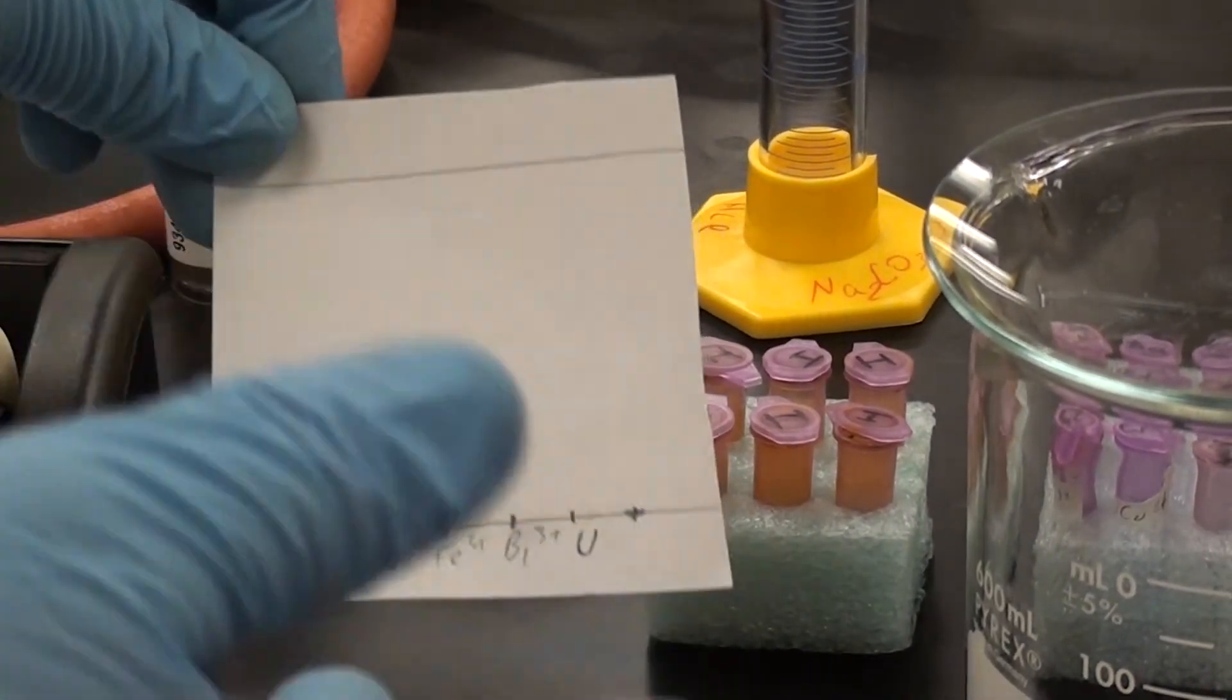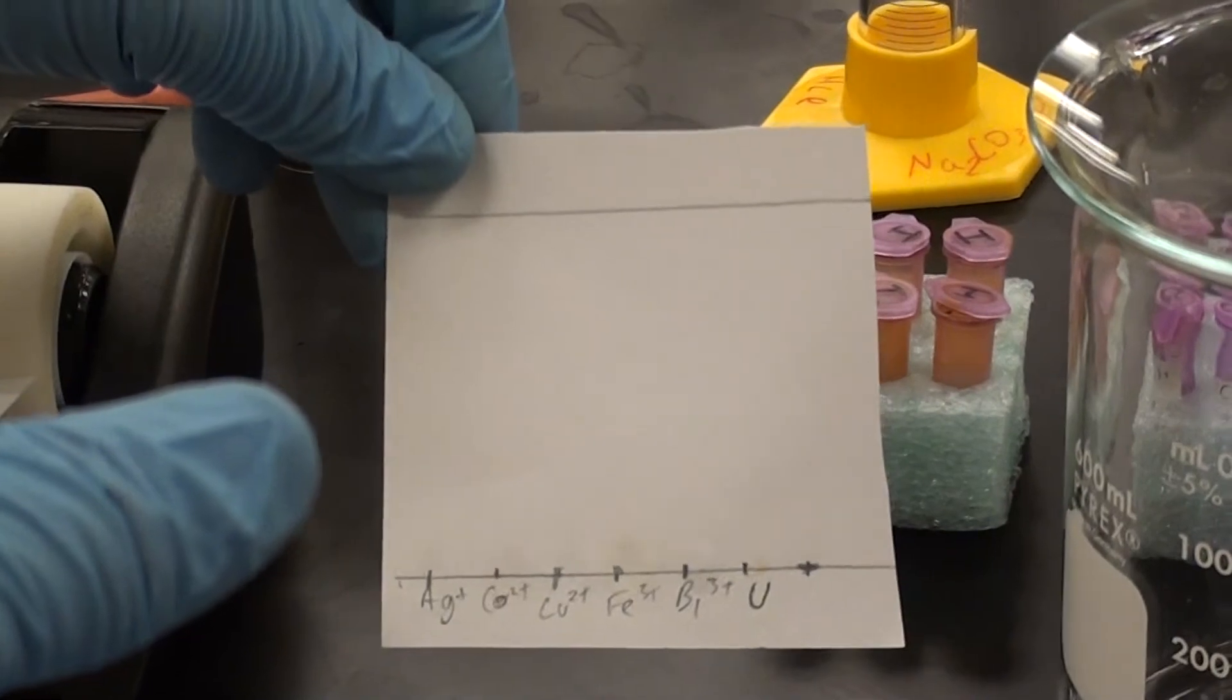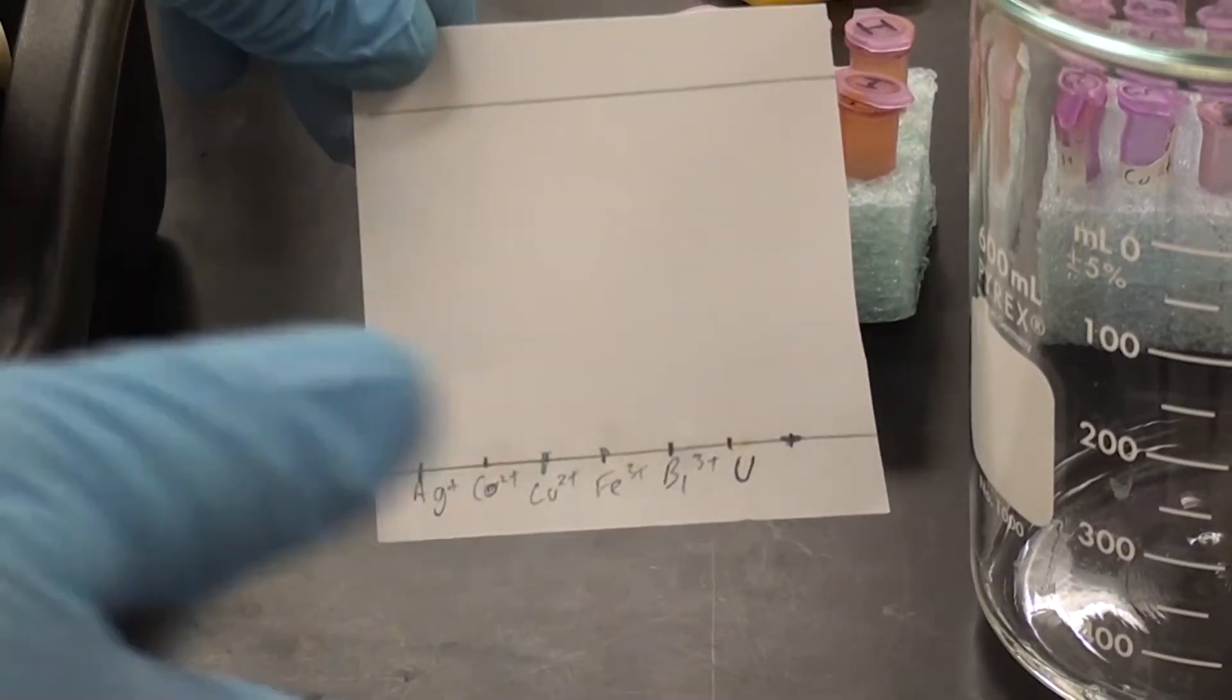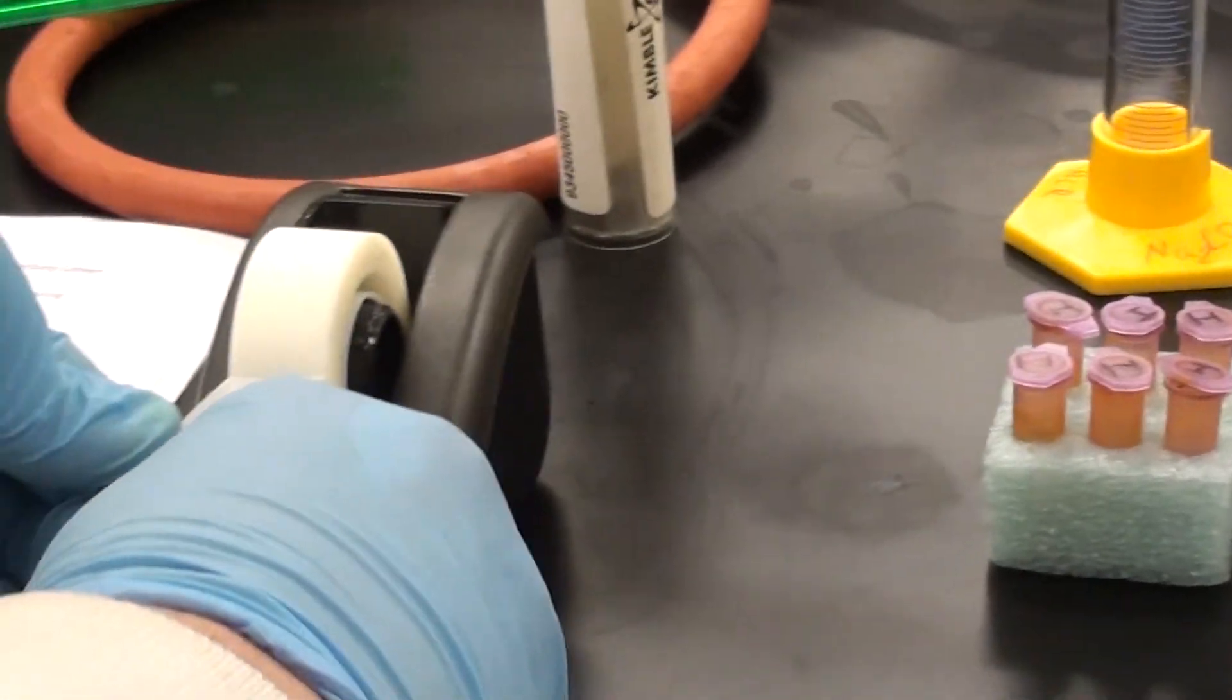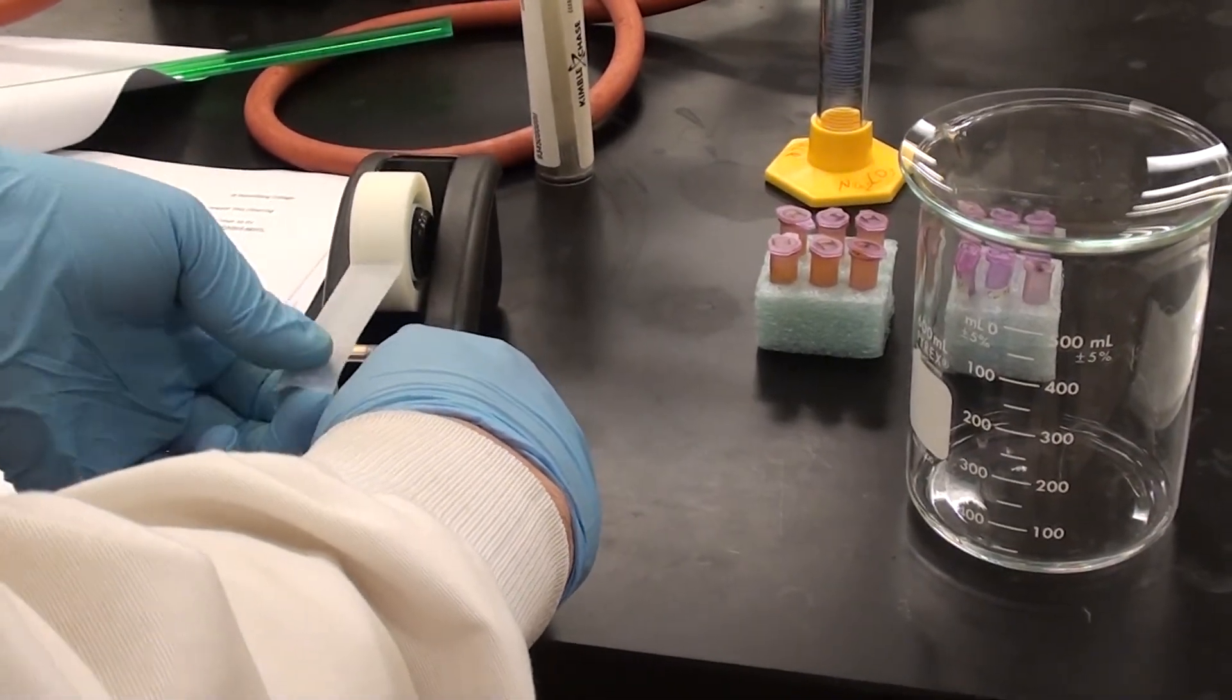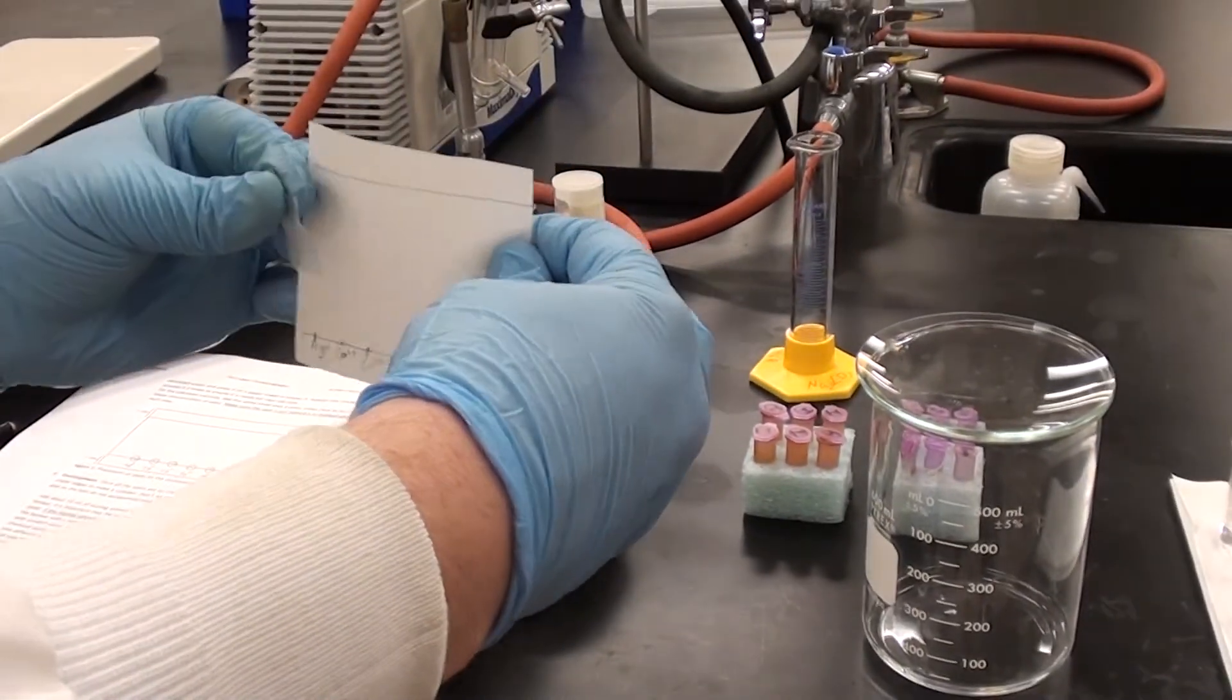Now, one thing you can do, it's kind of optional really for this because this could probably fit in the eluting container, in the developing container, and it probably wouldn't really need tape. But optionally what you can do, you can take some tape here and you can make this into a little cylinder.